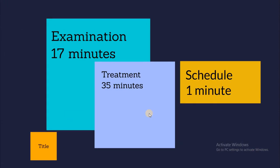Patient recall procedure involves three modalities. First, examination, which should take 17 minutes as the textbook states. In the examination we take a medical history, oral pathological examination, oral hygiene status, pocket depth change, mobility change, occlusal change, dental caries, and restorative and prosthetic status. This is the first step of the recall maintenance procedure.